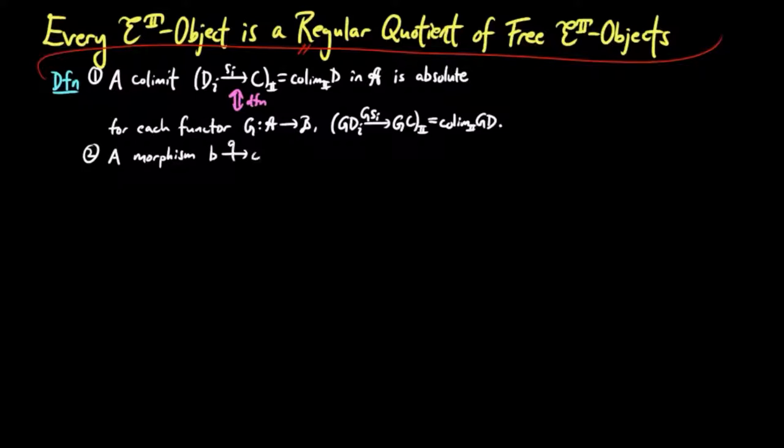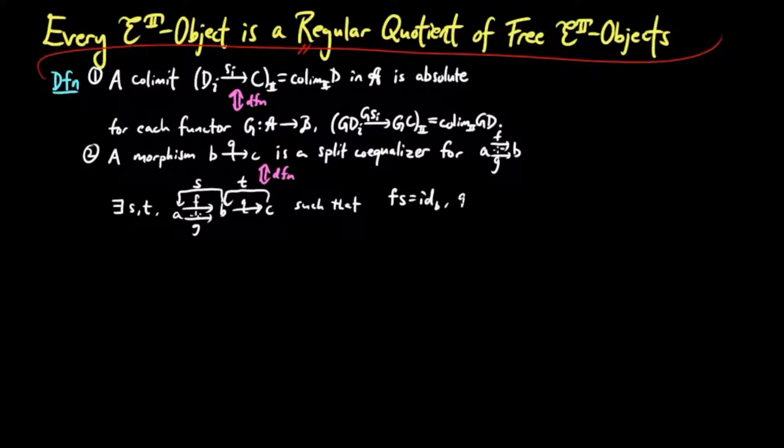And two, a morphism Q is a split co-equalizer for a parallel pair of morphisms F and G if and only if there exist morphisms S and T such that FS is the identity on B, QT is the identity on C, and GS is equal to TQ.